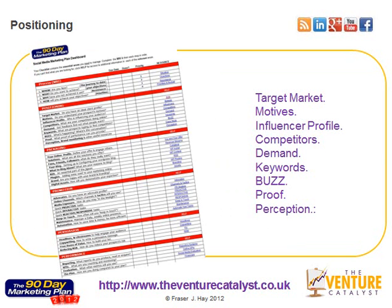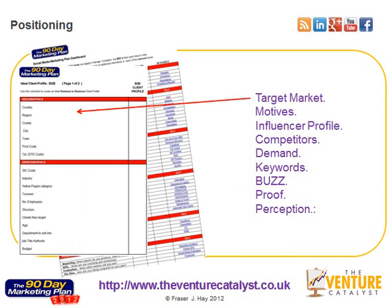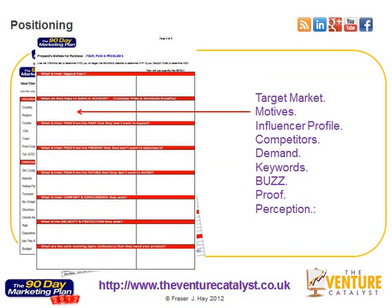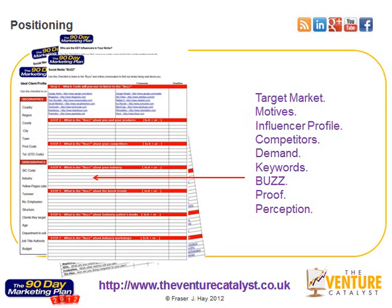When it comes to your positioning, you need to think about your target market and your target audience. Have you created an online profile of who it is that you're trying to reach and target? Do you know the motives behind their actions and activities online? Do you know which resources they're visiting and which ones they're taking part in? Have you created an influencer profile so you know exactly who's influencing your target audience and where they hang out? Do you know where the conversations are happening online, what the buzz is and how you can take part?